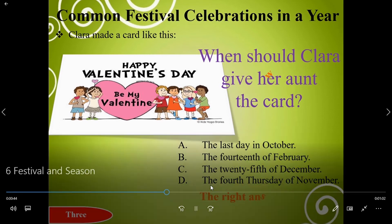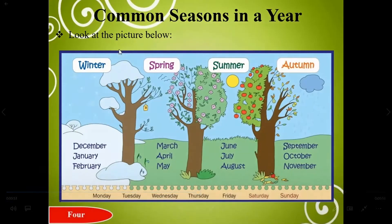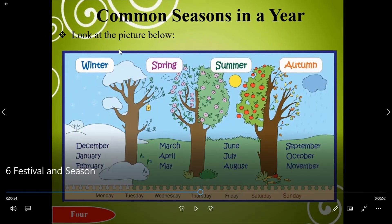Look at the picture below showing the four seasons: winter, spring, summer, and autumn. Winter is in December, January, and February. Spring is in March, April, and May. Summer is in June, July, and August. Autumn is in September, October, and November.